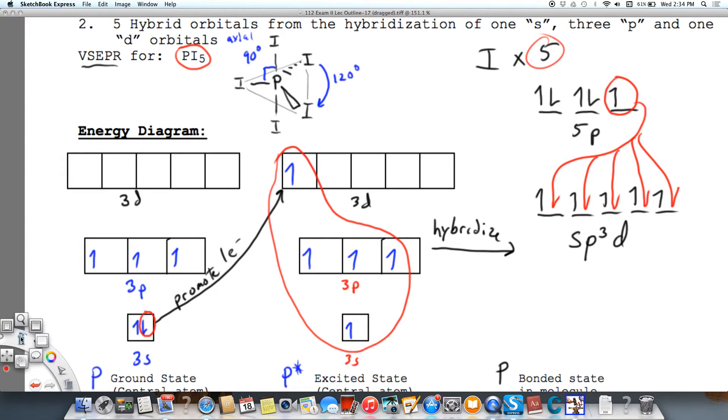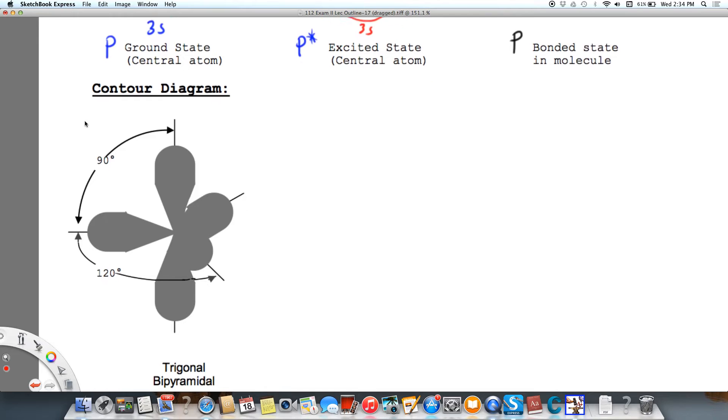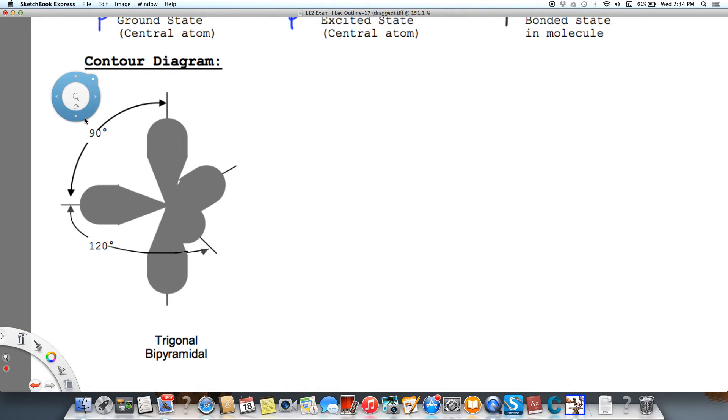Now we're ready to draw the contour diagram. So the way we're going to do that is we're going to put our phosphorus in the middle. And I'm just going to draw a line straight up, straight down, straight out. And then I'm going to draw a couple of them here like this at an angle. These are just going to be my reference lines for my orbitals.